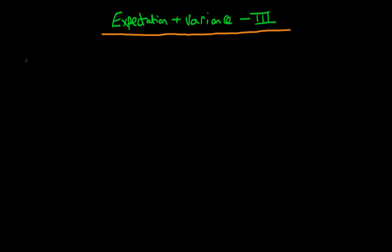In this video, I want to complete our run-through of what it means to take the expectation and variance of a random vector, by defining what it actually means to take the variance of a random vector x. I'm just going to write it out here and we're going to prove that this gives us our variance-covariance matrix, which we defined at the end of the last video.